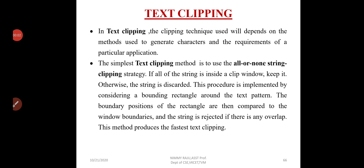Dear students, next we are going to study the last topic from the third module: text clipping. We already discussed point clipping and line clipping. Point clipping means we define a clip window, and the points outside the clip window need to be clipped — that is, removed — and the points inside the clip window need to be saved for display. Similarly, in line clipping, lines outside the clip window need to be discarded, and lines inside are saved for display.